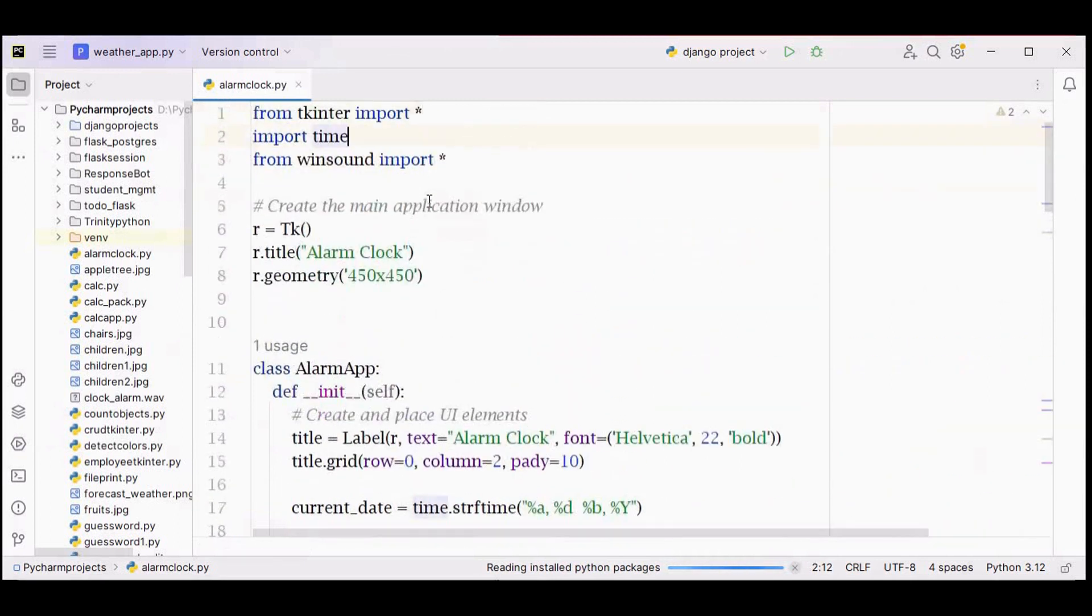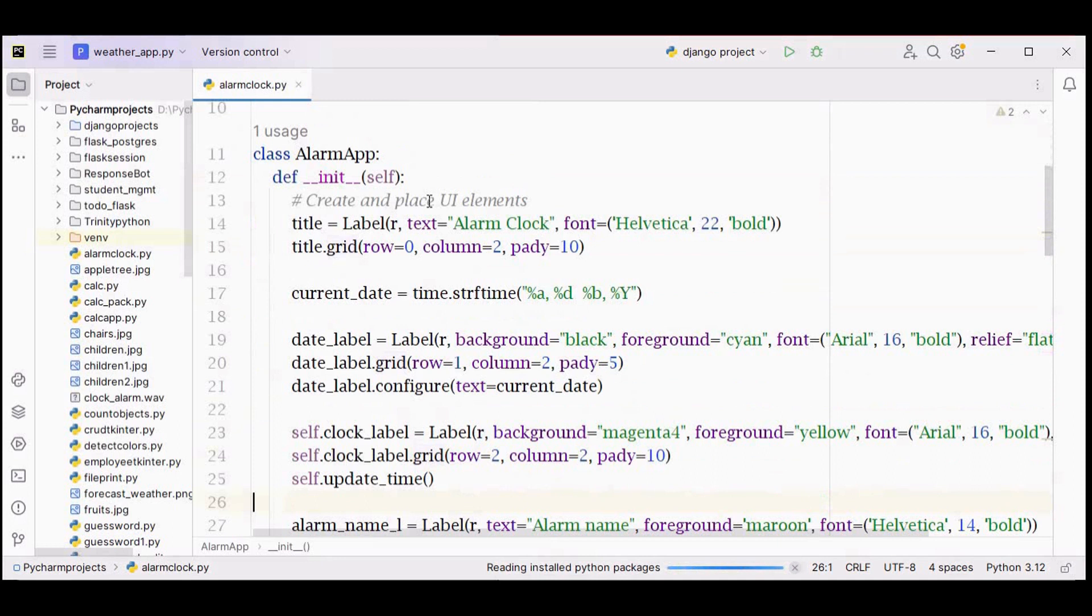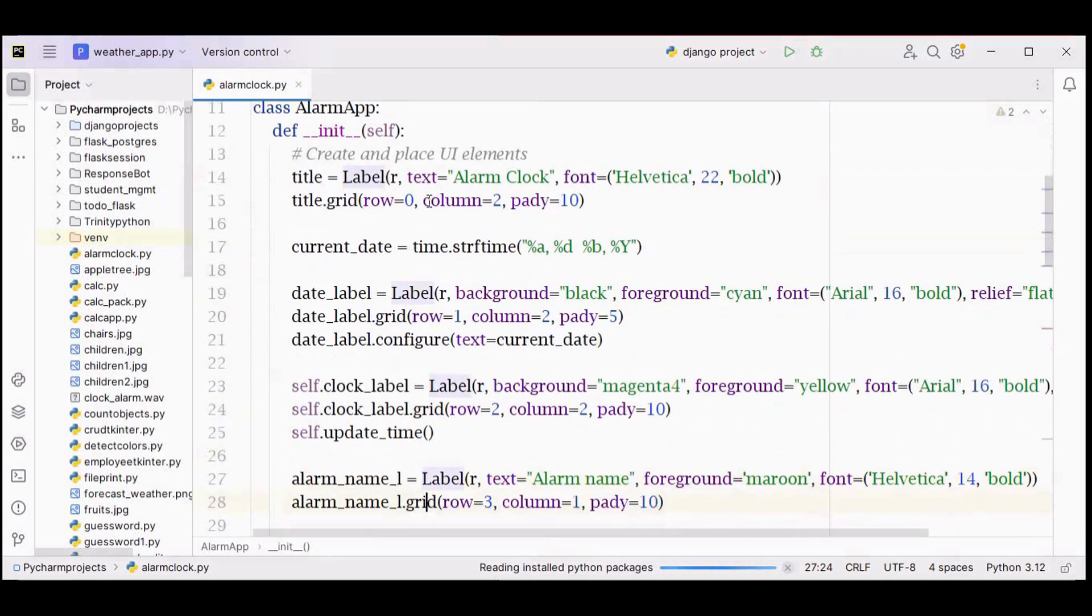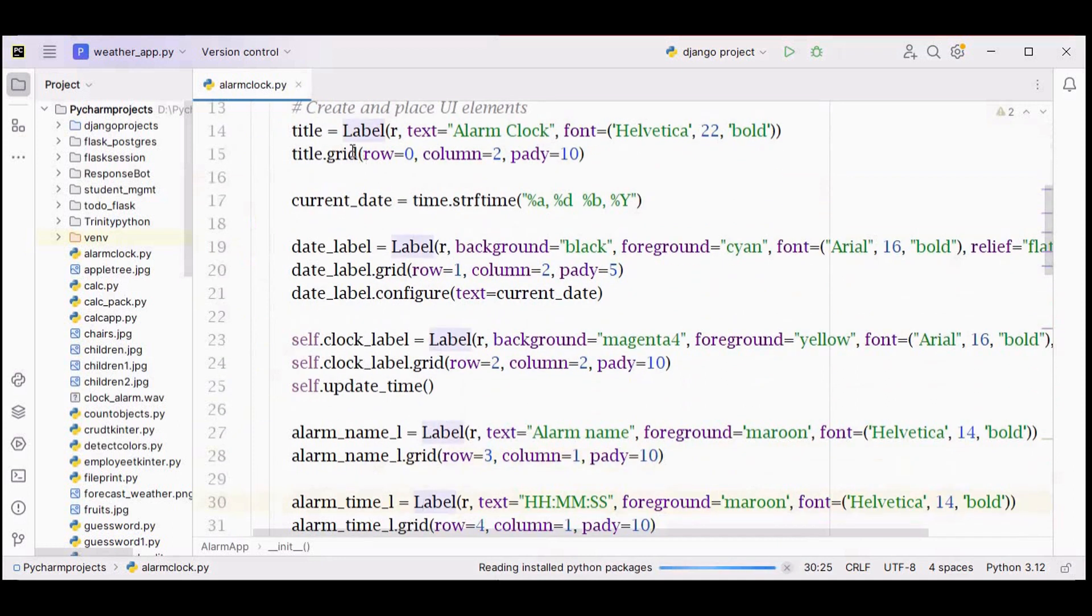This is what we have seen already: modules and then the main application window is created, class AlarmApp, creating and placing UI elements. I am using grid method here. Grid geometry manager of tkinter is used to represent the data in a two-dimensional format, that is in terms of rows and columns.